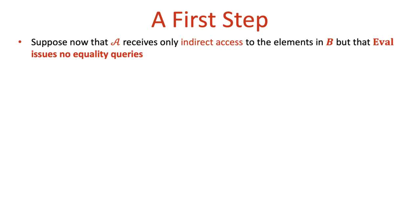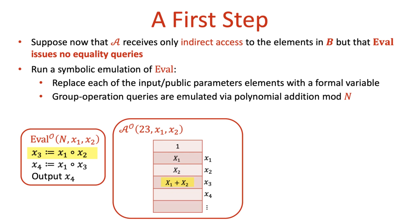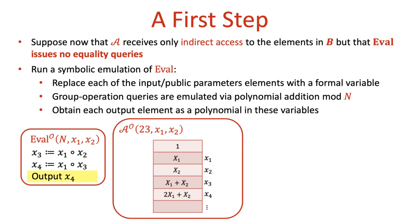As a first step towards the actual attack, consider the case where the attacker gets only implicit access to the group elements and eval does not make any equality queries. In this case, what the attacker can do is locally run a symbolic emulation of eval. The emulation replaces each group element with a formal variable — in the example on the slide, these are the formal variables X_1 and X_2. Group operation queries are replaced with polynomial addition modulo n, and the output is obtained as a polynomial in these formal variables.